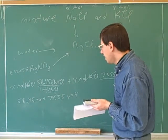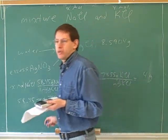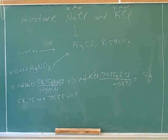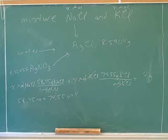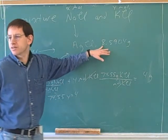Does that look right? That's some good progress, but we still need another equation. We have two unknowns and we only have one equation, so we have to look at the other information and see if we can squeeze out one more equation about x and y. We're going to have to use the silver chloride data. How can we get another equation about x and y using the information about the silver chloride precipitate?